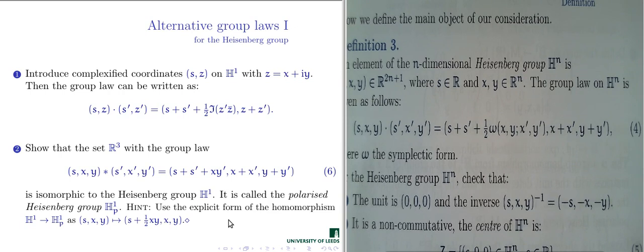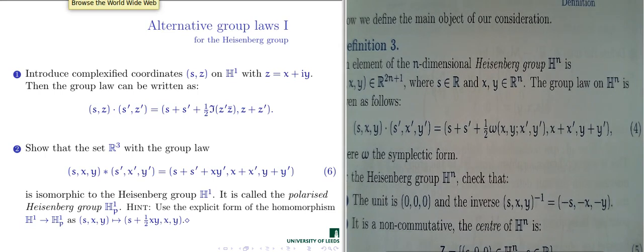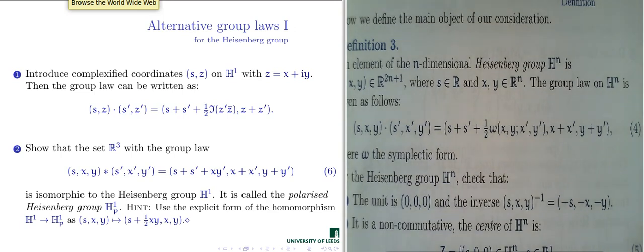A student asks: is this just the inner product? Yes, for the one-dimensional Heisenberg group in ℝ³ it is just a product of numbers, and for vectors you put the inner product of vectors there. This is called the polarized form of the Heisenberg group, and there is a group homomorphism from the ordinary Heisenberg group to this polarized form given by the corresponding formula.